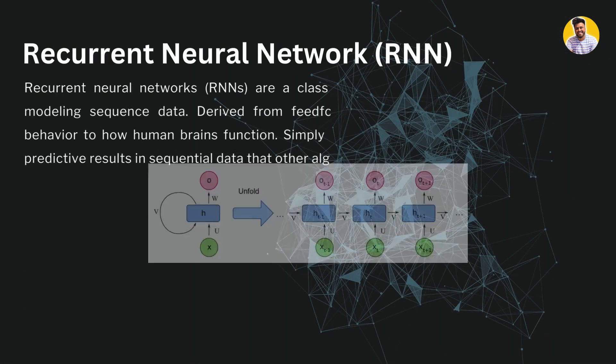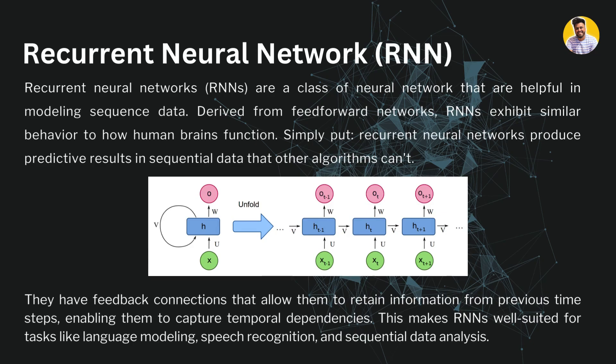The next type is recurrent neural networks. Recurrent neural networks are used for sequence data. They are derived from feed forward neural networks and exhibit similar behavior to how the human brain works, but they produce predictive results on sequential data that other algorithms can't — because they have a feedback loop which does not exist in feed forward neural networks.